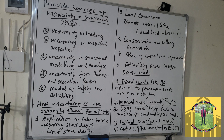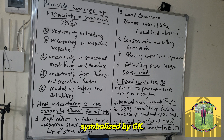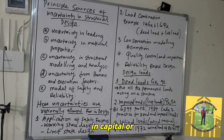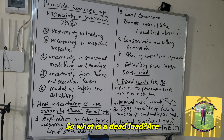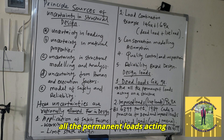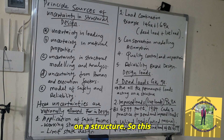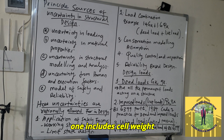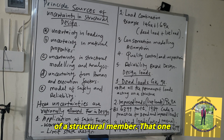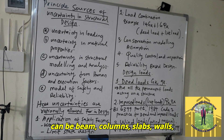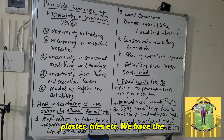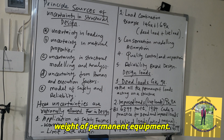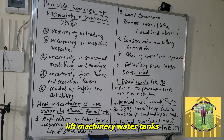Design loads include, number one, dead loads symbolized by GK. Dead loads are all permanent loads acting on a structure, including the self-weight of structural members such as beams, columns, slabs, walls and roofs; the weight of finishes such as flooring, plaster and tiles; and the weight of permanent equipment such as lift machinery and water tanks.